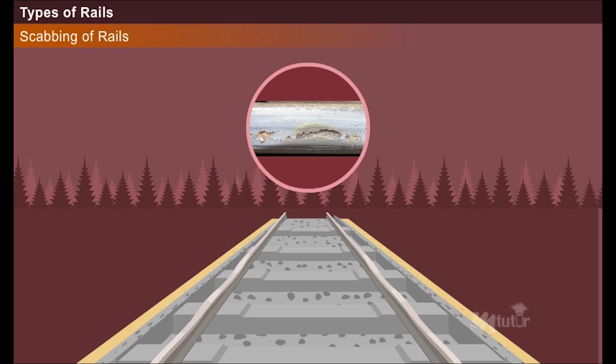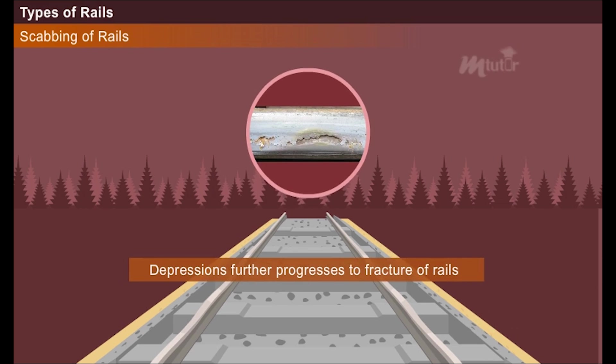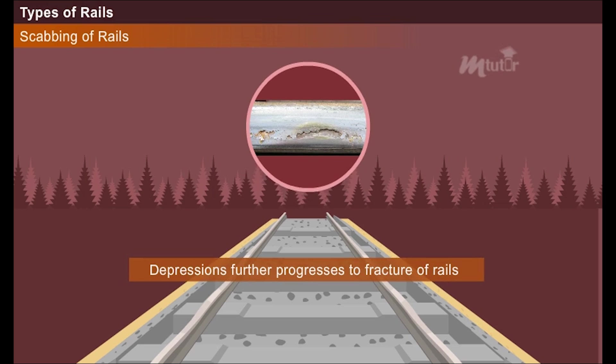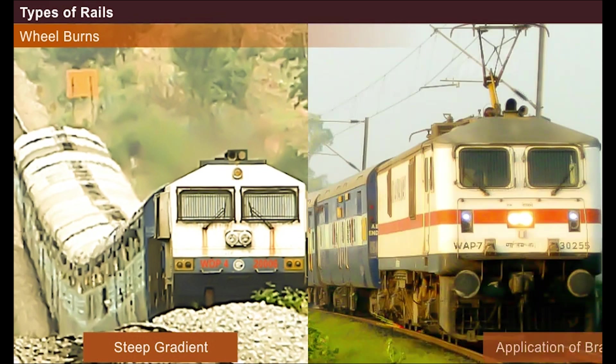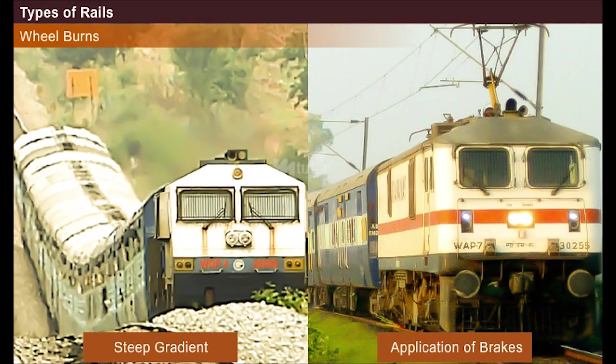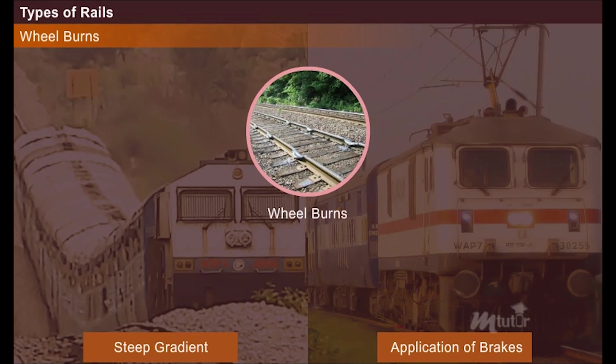If left unnoticed, these depressions progress leading to the fracture of rails. Generally when a train climbs a steep gradient or is subjected to the constant application of brakes, heat is produced in its wheels. This heat forms depressions on the rails called as the wheel burns, which reduce the longevity of the rails.